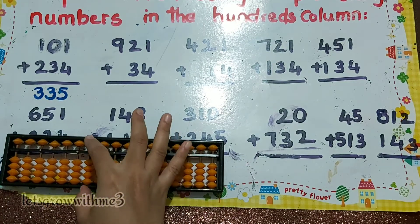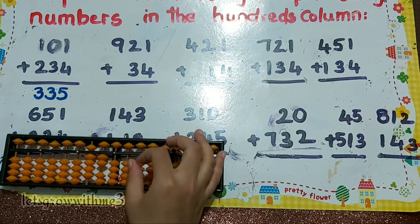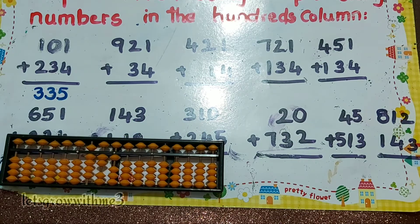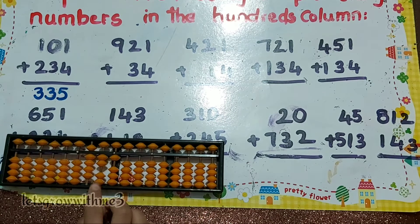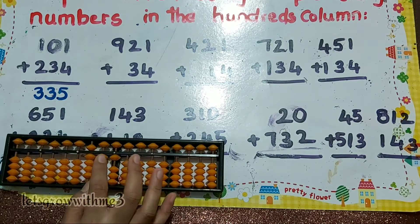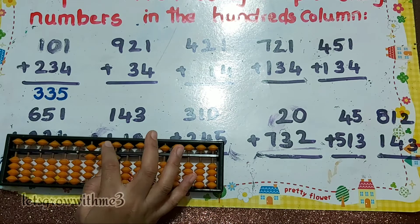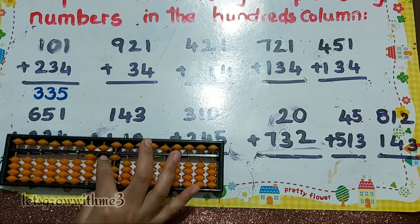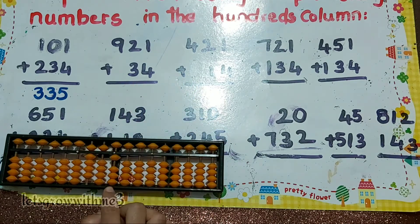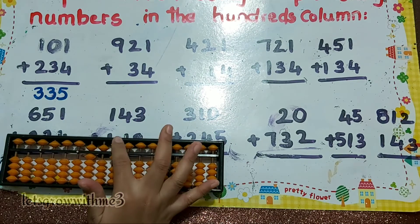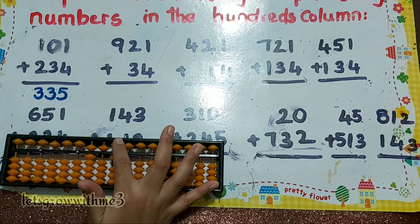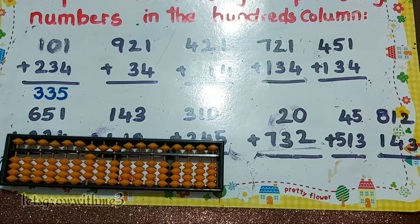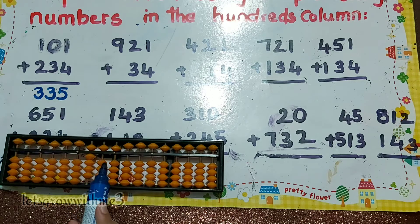Next one: 921 plus 34. How to add plus 3 — we don't have beads, so we have to go for small friend or junior friend. Plus 5, plus 3 complementary is minus 2, and you must add 4 here. We can't add directly 4, so we must go for junior friend: plus 5 minus 1. So 4's complement is minus 1. Our answer is 955.